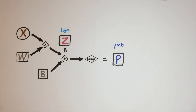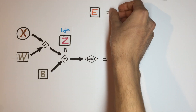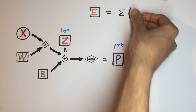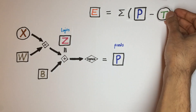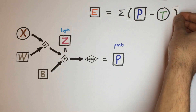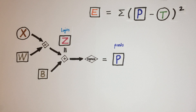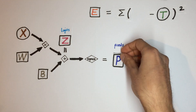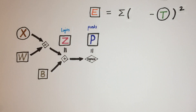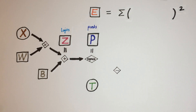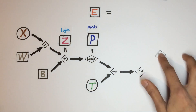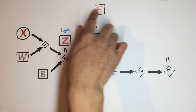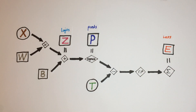Now to find the error, the standard equation for regression is e equals the sum of the predictions minus the targets squared, which we can extend onto the existing predictions graph by subtracting the target value, squaring it, and then summing the errors over all batches.